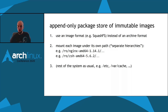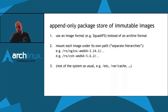We use an image format instead of an archive format for distributing packages. In our case we use squashfs, but any format would work — I chose squashfs because I already had code to read and write squashfs images. We mount these images under their own paths, which is a concept called separate hierarchies. On a DISTRI system, nginx would be available under /ro/nginx-amd64-1.14.1 — the fully qualified version number and architecture are always in the path. This applies to all system packages; for example, the zsh package would be at /ro/zsh-5.6.2, etc. The rest of the system is laid out as usual with standard /etc, /var/cache, etc.